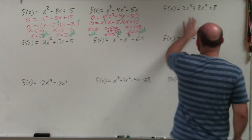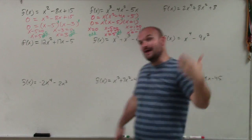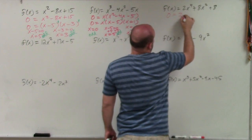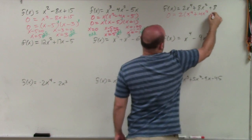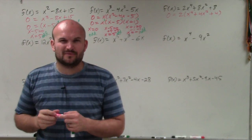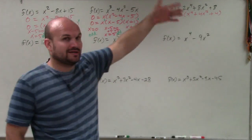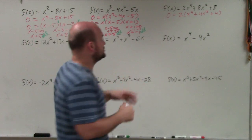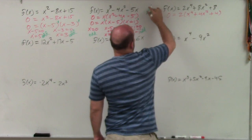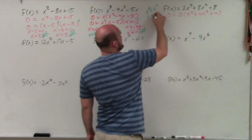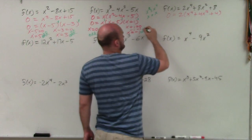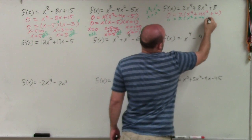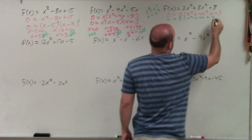Moving on to the next one — in this case they don't all share an x, but they do share the number 2, so I'm going to factor out the number 2. Setting it equal to 0 and factoring out 2, I'm left with x to the fourth plus 4x squared plus 4. This one gets a lot of students. The best way to think about it is to substitute: say x squared is equal to x to the fourth, meaning x equals x squared. So I can rewrite this as 2 times x squared plus 4x plus 4.